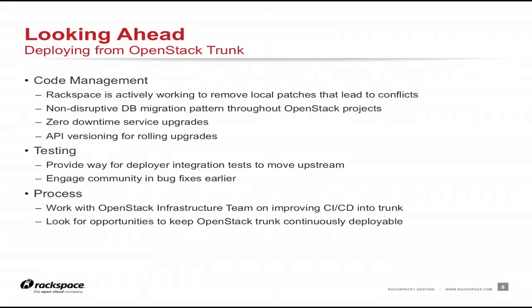Moving on to testing: we have a lot of initiatives around finding bugs earlier in the cycle. We want to move all our tests — minus anything Rackspace-specific — upstream. If we can move the tests that are currently finding issues late in our pipeline upstream, those issues will be found before we even pull the code down into our system. That allows us to fix them much faster without having to do local patches and go through the longer feedback loop.